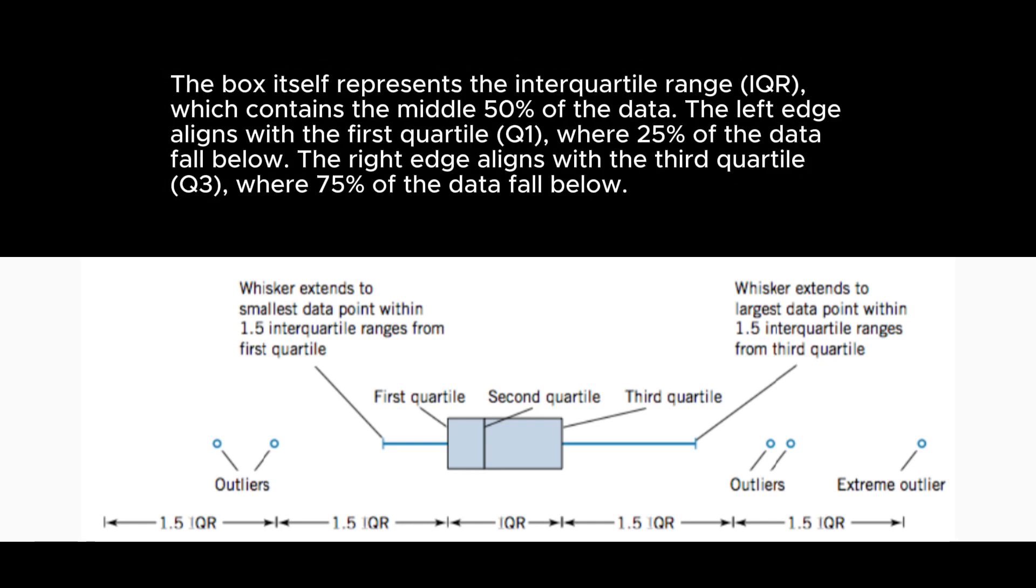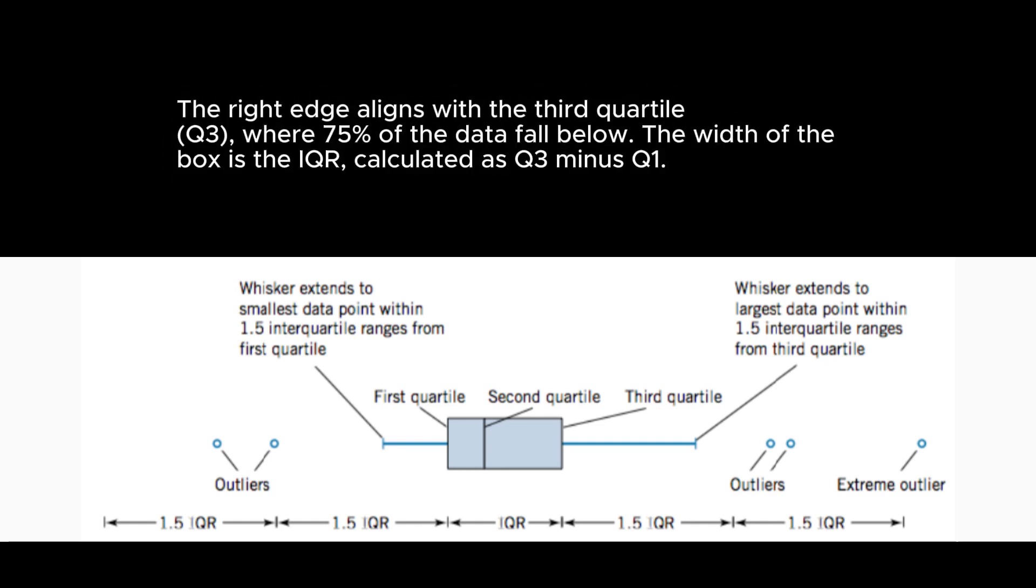The spread is the length of the box, which is also the interquartile range that indicates the variability of the central 50% of the data. A larger IQR means greater variability.